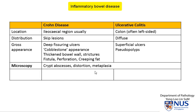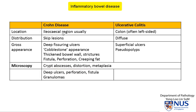Microscopically, they share some common features. In both conditions we would see some distortion of the crypts, crypt abscesses — so acute inflammation within the crypts — and some sort of metaplasia. For example, in Crohn's disease in the small bowel, we can see pseudopyloric metaplasia resembling a gastric enteral type of mucosa. In Crohn's disease, the microscopy mirrors what we see on the gross: there are deeper ulcers, there may be perforation and fistula formation, and importantly, we can see non-caseating granulomas in the mucosa.